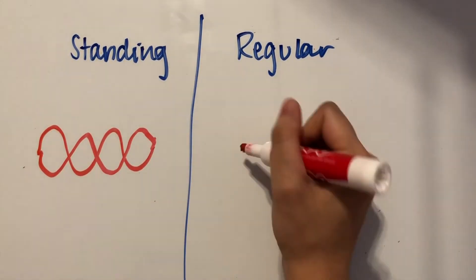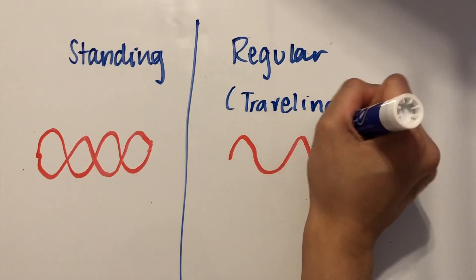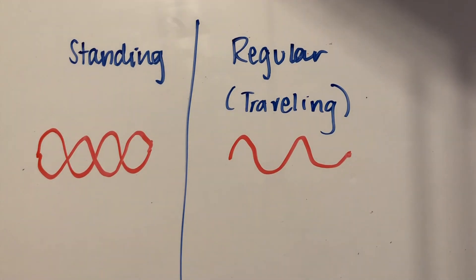In other words, the standing wave will look like the one on the left. The opposite of a standing wave is a traveling wave, which is what we've been seeing throughout this video.